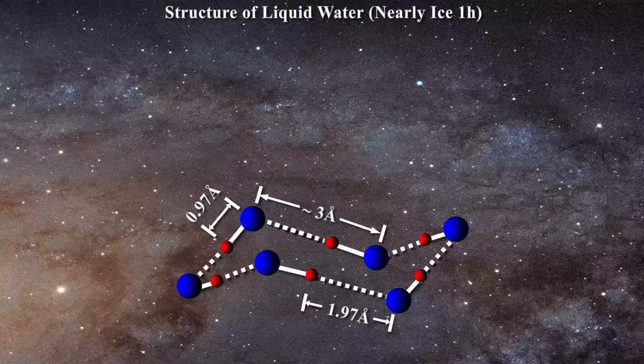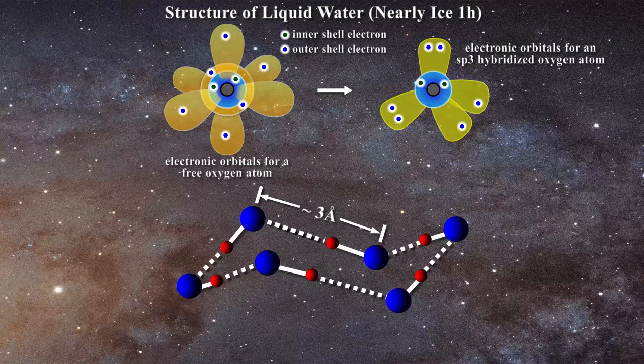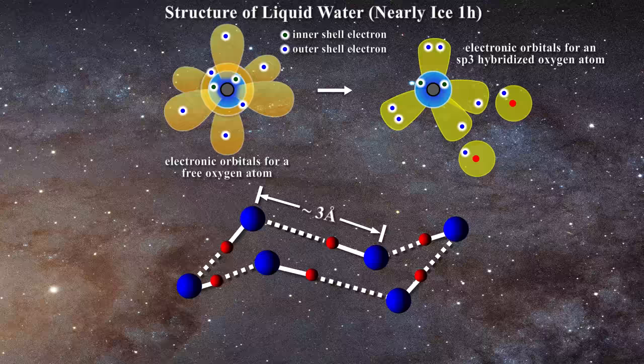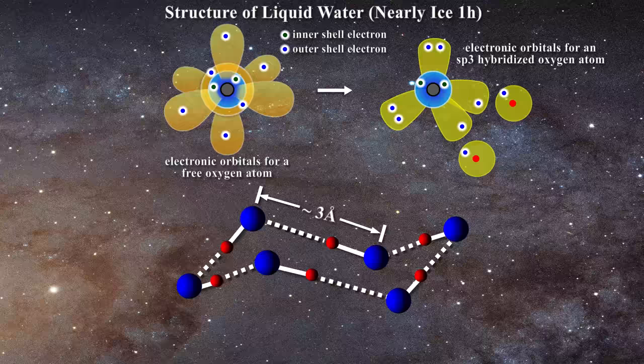The oxygen atoms in water possess six outer shell electrons and are sp3 hybridized. Two single electrons occupy two of these hybridized orbitals. These two electrons each make a sigma bond to a hydrogen atom.